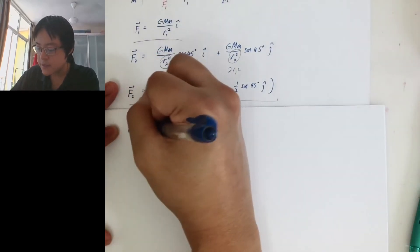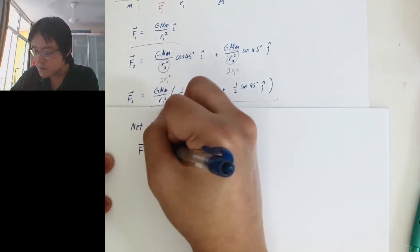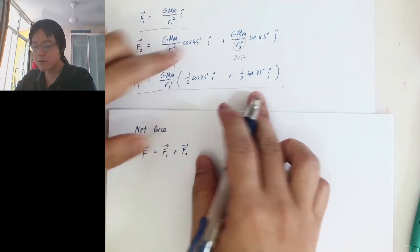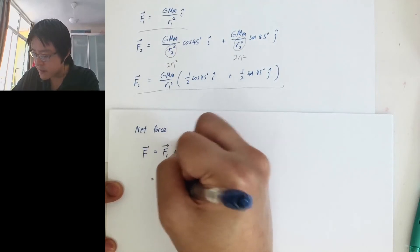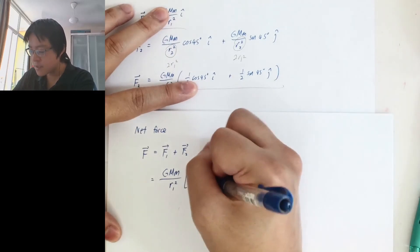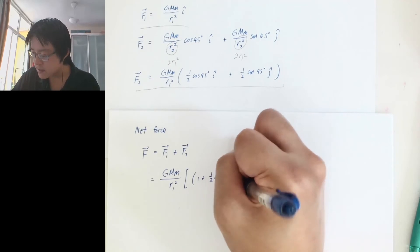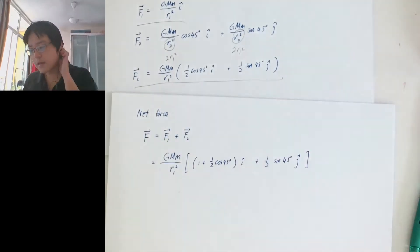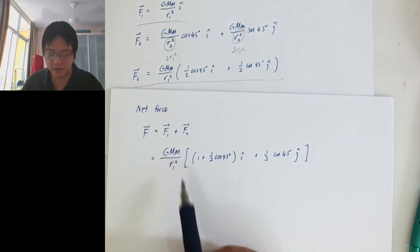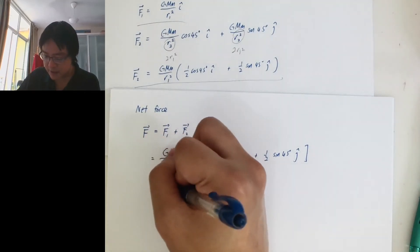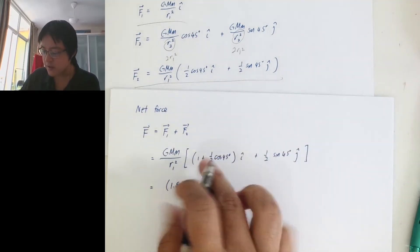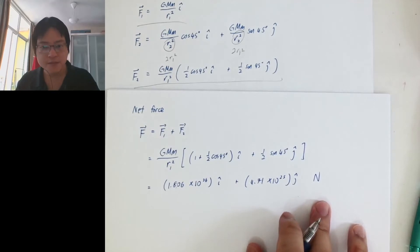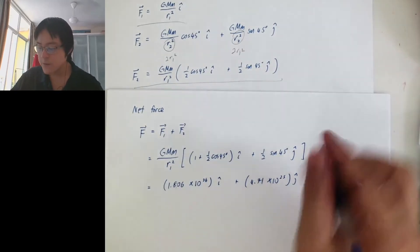The net force experienced by the little m is just F1 plus F2. I have these two already — just add them together. The I components combine: 1 plus half cos 45 degrees in the I direction. There's only one J component: half sine 45 degrees in the J direction. Everyone has a factor of GMm over R1 squared. At the end, if you calculate everything, you get 1.806 times 10 to the 26 newtons in the I direction, and 4.71 times 10 to the 25 newtons in the J direction. That is how we determine the net force.